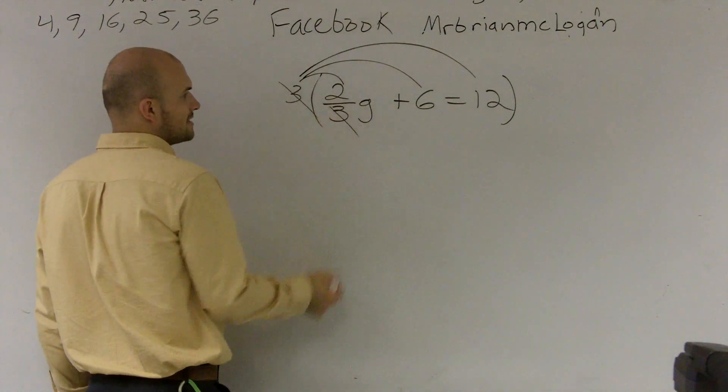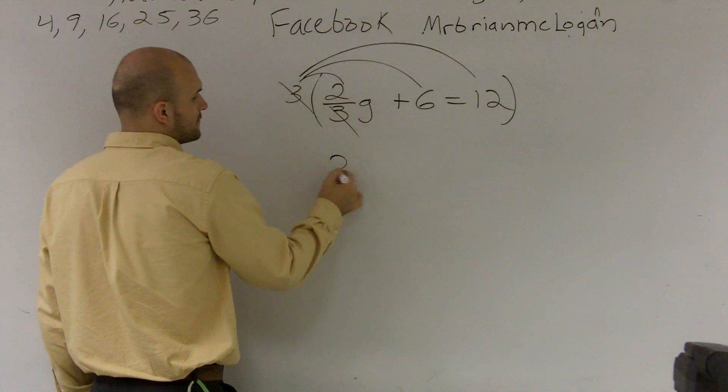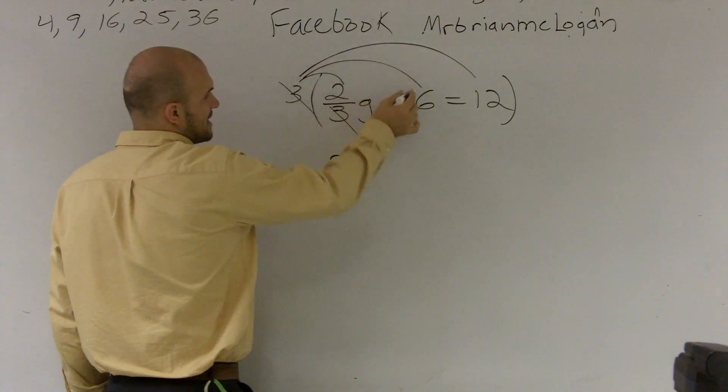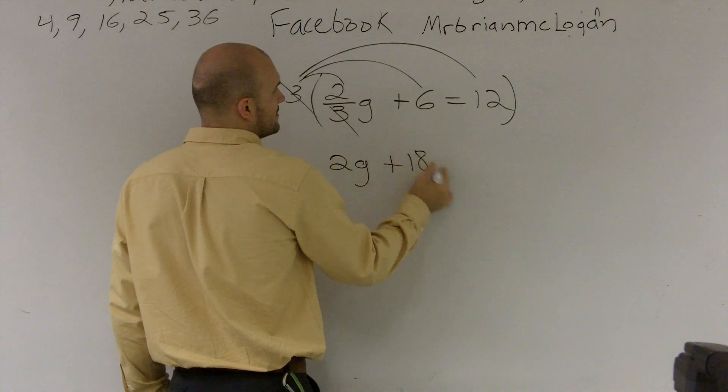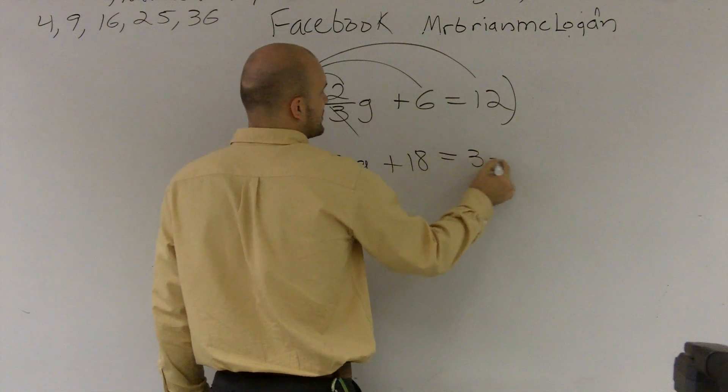Well, these two threes cancel out. So I'm left with 2g. Three times six is positive 18 equals three times 12, which is 36.